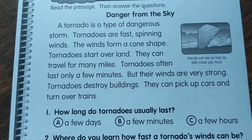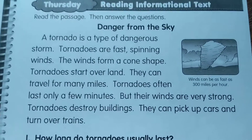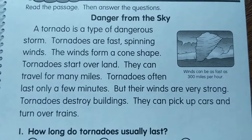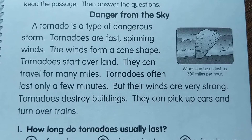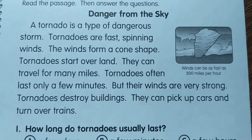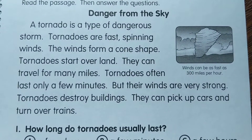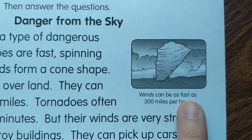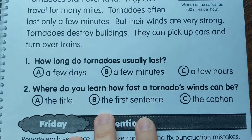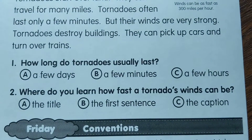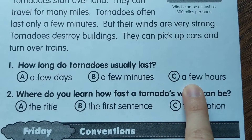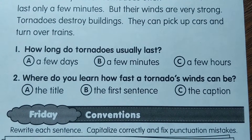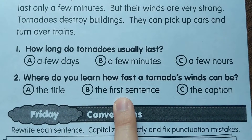On the back, we're going to read this passage and then answer the questions. The passage is called 'Danger from the Sky.' A tornado is a type of dangerous storm. Tornadoes are fast spinning winds that form a cone shape. Tornadoes start over land and can travel for many miles. They often last only a few minutes, but their winds are very strong — they can destroy buildings, pick up cars, and turn over trains. The caption says winds can be as fast as 300 miles per hour. Question one: how long do tornadoes usually last — a few days, a few minutes, or a few hours? Question two: where do you learn how fast the tornado's winds can be — the title, the first sentence, or the caption?